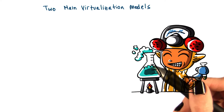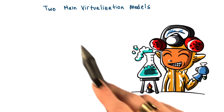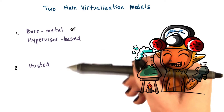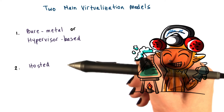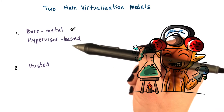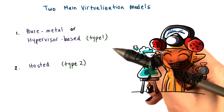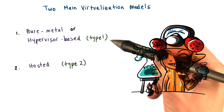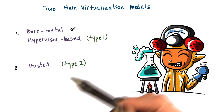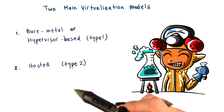Before describing the technical requirements for virtualization, let's take a look at the two main virtualization models. The two popular models are called bare metal or hypervisor based, and hosted. They're also often referred to as type one for the hypervisor based model and type two for the hosted model for virtualization solutions.